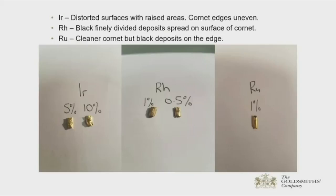Iridium produces a distorted surface with raised areas; the cornet edges are uneven, which is a possible source of error. Rhodium leaves black, finely divided deposits spread over the surface of the cornet. Ruthenium is a bit cleaner, but black deposits are collected around the edges.